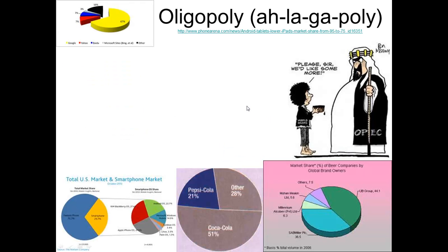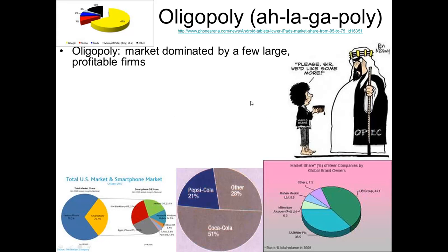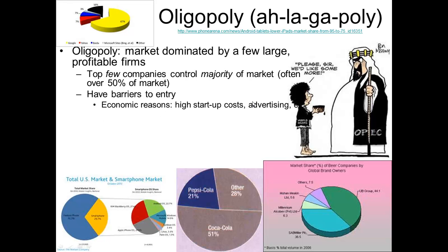Finally, the last one — and this is the fun one to say — oligopoly. An oligopoly is when a market is dominated by a few large, profitable firms. If you can think of any industry where there's only a couple of big dogs, that's probably an oligopoly. For instance, the soda industry: Pepsi and Coke are pretty much the only soda companies you can buy from. If you look at the pie chart on the bottom of the screen, Coke and Pepsi have about 72% of the market — that's huge. When you have these few companies that control the industry, that's called an oligopoly.